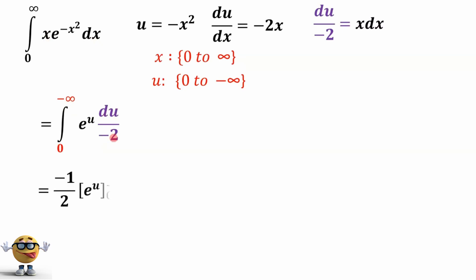Now, at this point, we can evaluate it. This is just the integral of e to the u. This is our friend, the integral of e to the u. Du is just itself. And we're going to go from 0 to negative infinity. We have a negative 1 half here because this is negative 1 over 2. It gets pulled out of the integral.